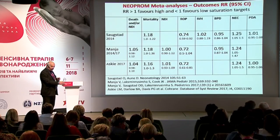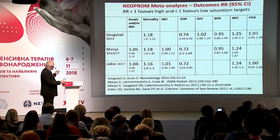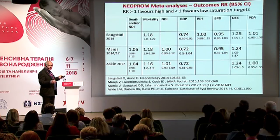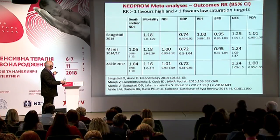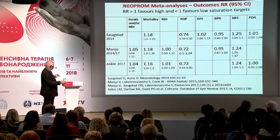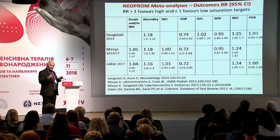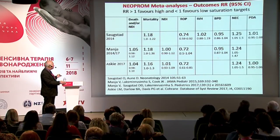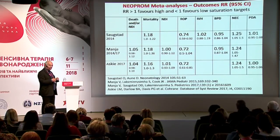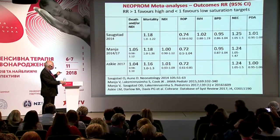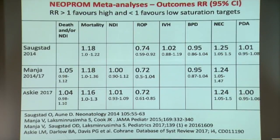Four meta-analyses have been published based on these data. The primary outcome—death and/or neurodevelopmental impairment—showed no difference between high or low saturation target babies. But mortality showed an 18% increase in the low saturation babies. Neurodevelopmental impairment showed no difference. ROP showed approximately 25% reduction in the low saturation target babies. No effect on intraventricular hemorrhage, no effect on BPD—which we all believe is oxygen-dependent, but perhaps that's wrong. More necrotizing enterocolitis in the low saturation target babies. And again, no effect on PDA, so maybe oxygen is not so important for PDA after all.